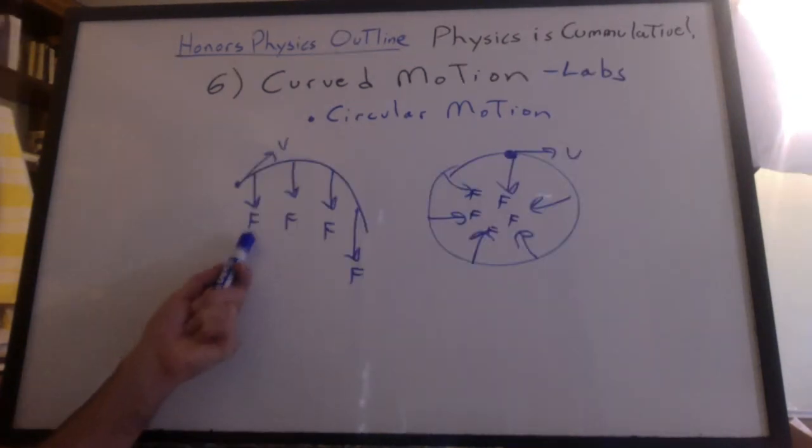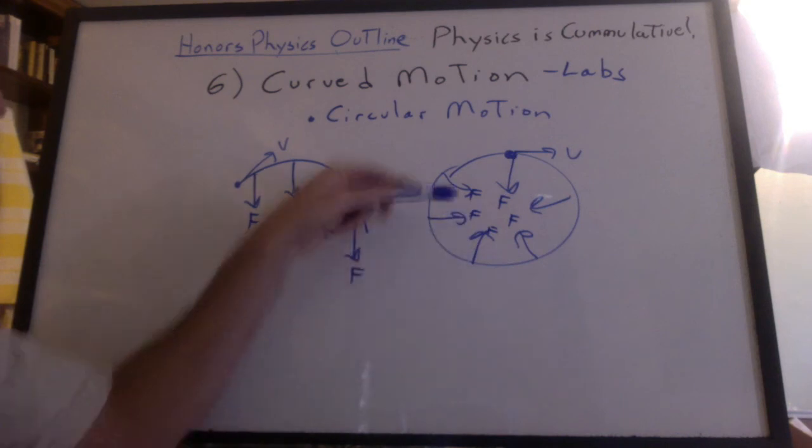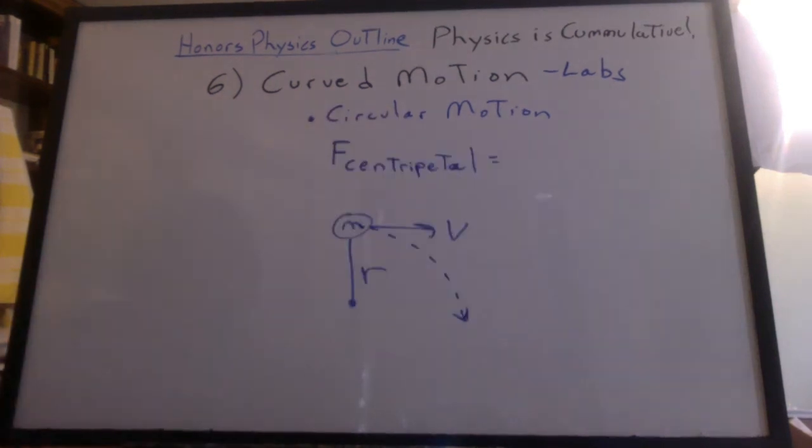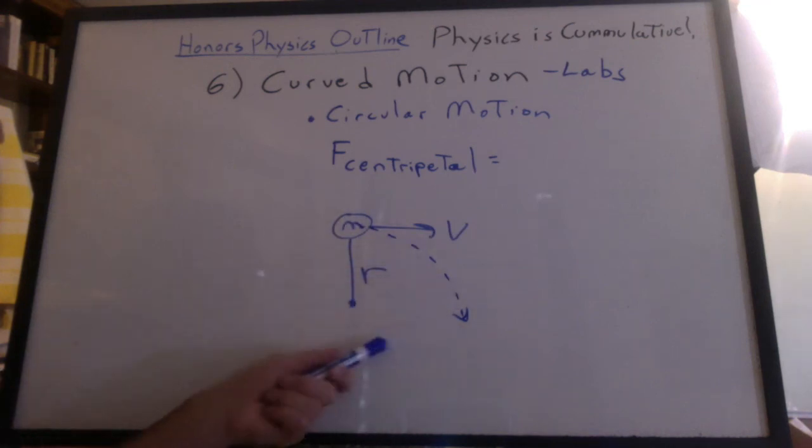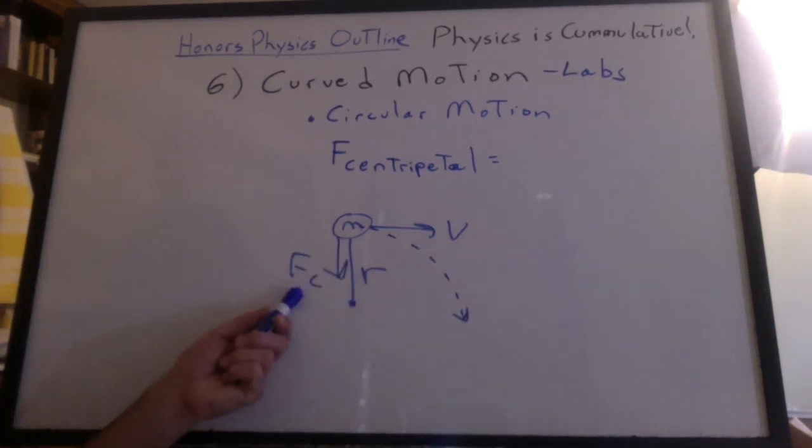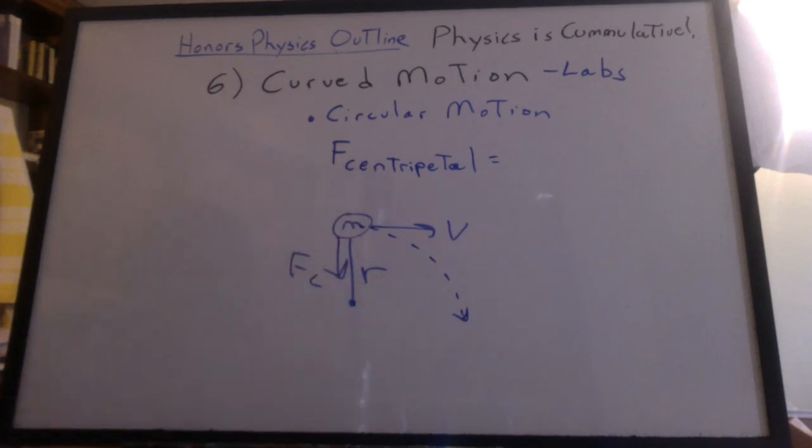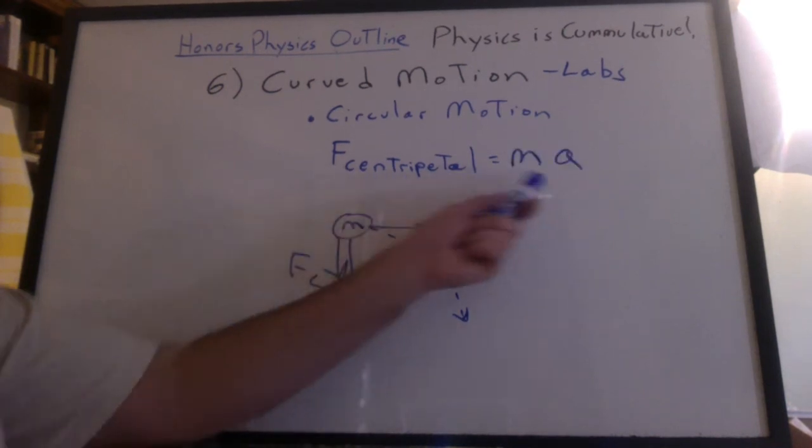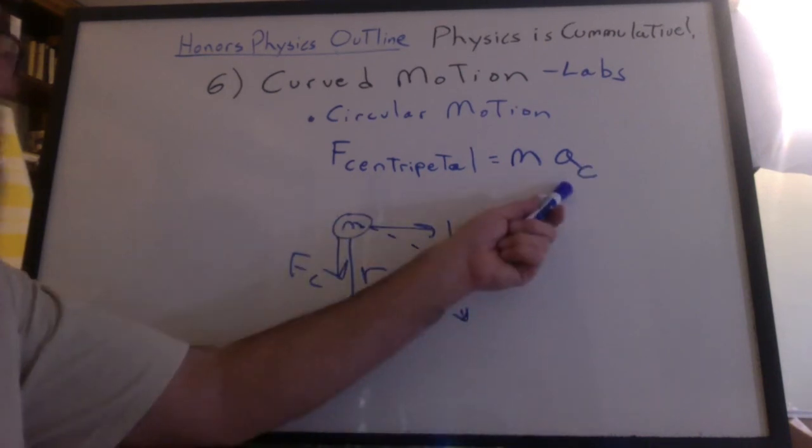And then we did circular motion. In projectile motion, the force was always down due to gravity. In circular motion, the force kept changing direction, always aiming towards the center. We found that if the object was going to move in a circle, something had to force it to stay in the curve or it'll go in a straight line. The force required to do that always pointed to the center, so we called it a centripetal force.